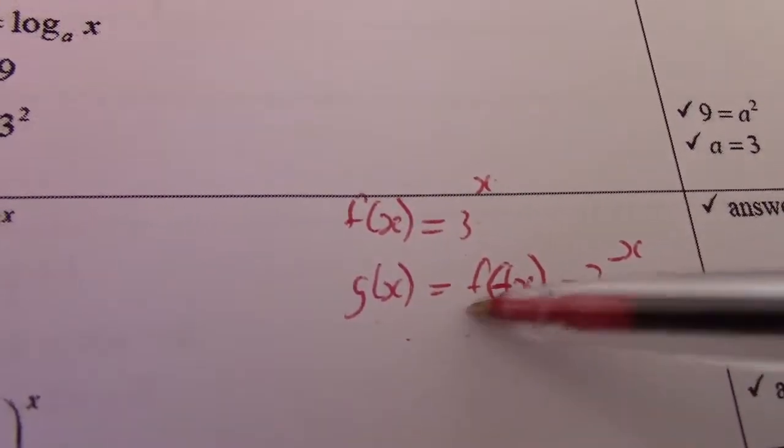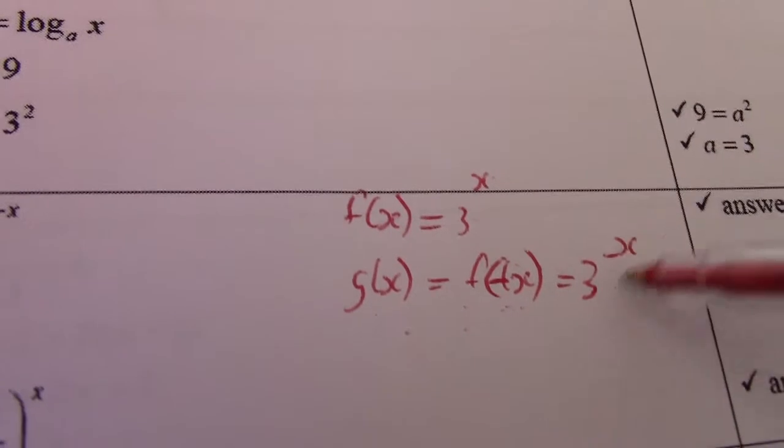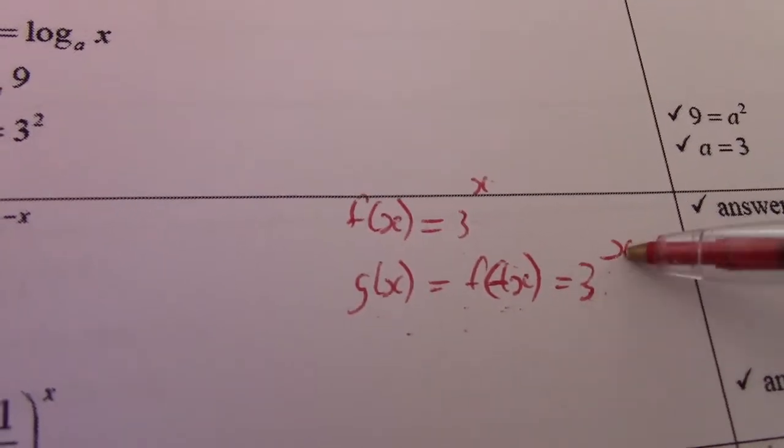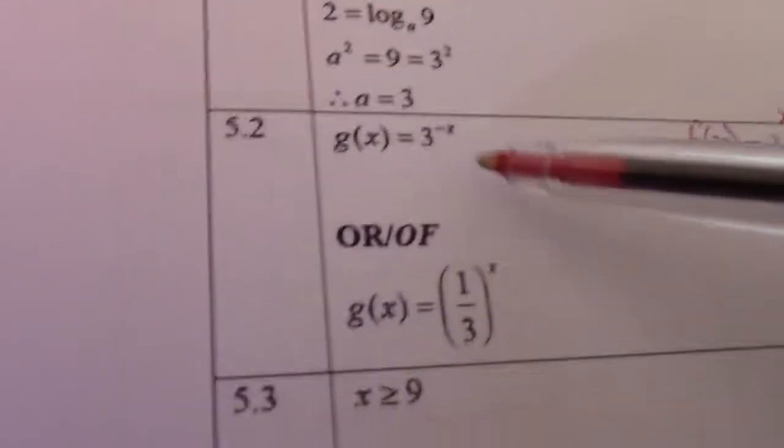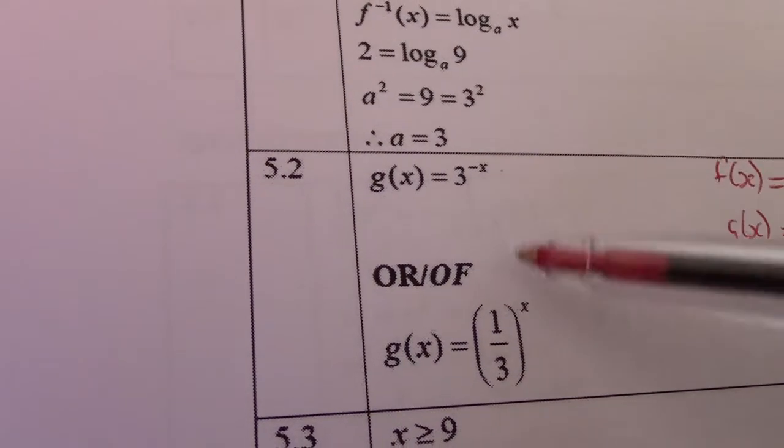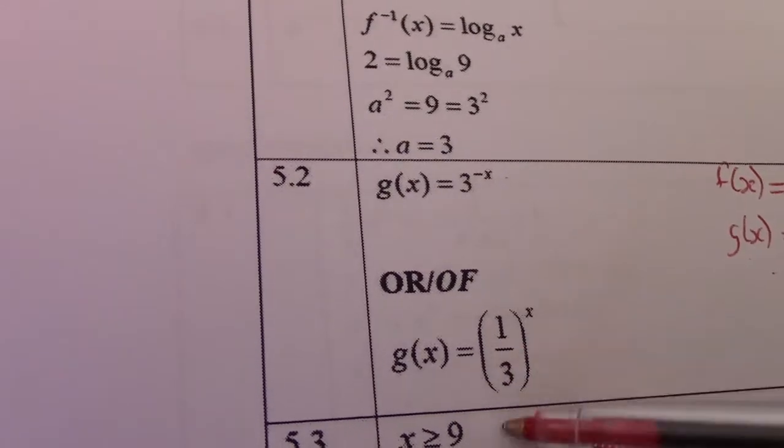So if g of x equals f negative x, then there my x simply becomes 3 to the power negative x. So there g of x equals 3 to the negative x. Or, if I take x to the bottom and make it positive, that would become 1 over 3 to the power x.